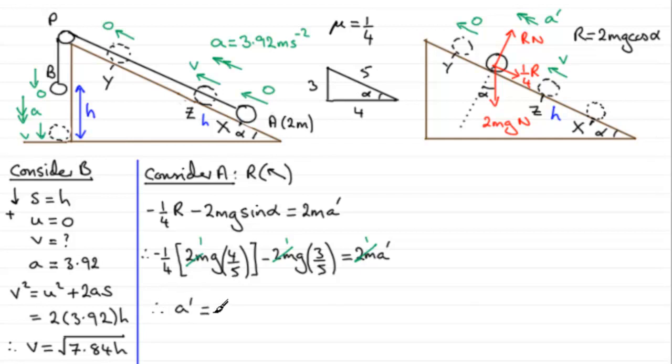So therefore A prime is equal to, and what we've got here is minus a quarter then of 4 fifths g, so that's going to be minus 1 fifth g. And here we've got minus 3 fifths g, so that's going to be minus 4 fifths g. Or you might want to change this to a decimal, the minus 4 fifths. If you do, that's going to be minus 0.8, so you've got an acceleration A prime of minus 0.8 g.